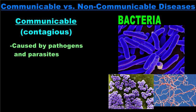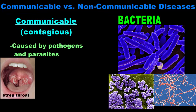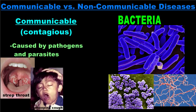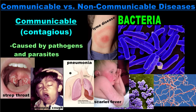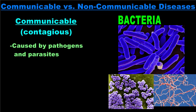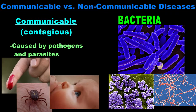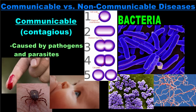Some examples of diseases caused by pathogenic bacteria include strep throat, whooping cough, pneumonia, scarlet fever, and Lyme disease. Pathogenic bacteria cause infections when they enter your body, either through a cut, insect bite, or through mucous membranes such as your mouth, nose, or eyes. The bacteria reproduce inside your body, and many give off toxins that damage cells and make you sick.